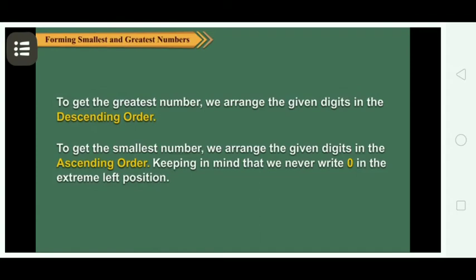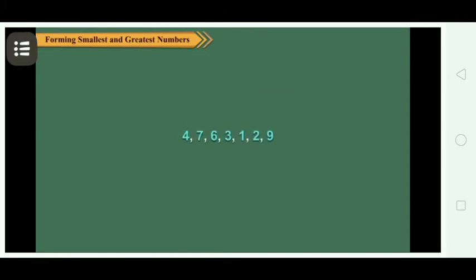Keeping in mind that we never write 0 in the extreme left position, let us write the smallest 7-digit number without repeating a digit using the given digits. Arrange the given digits 4, 7, 6, 3, 1, 2, and 9.